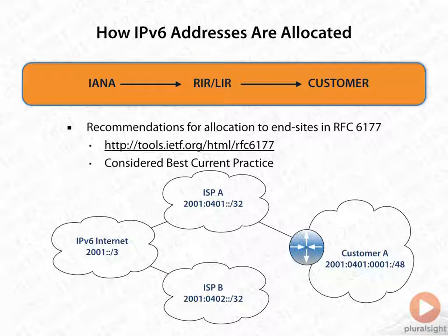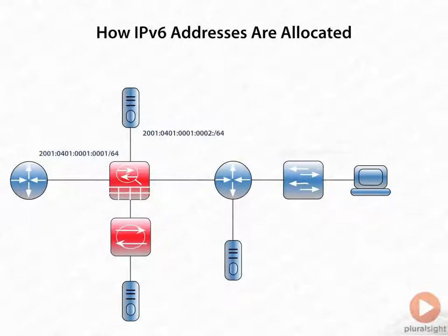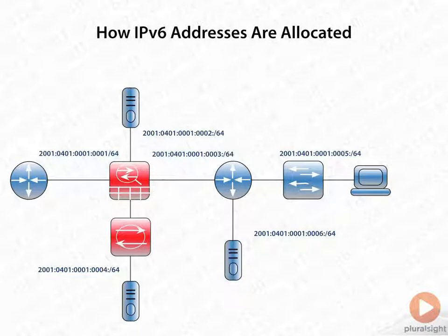We have 16 bits remaining that we can allocate internally as a customer. Remember, 64 bits is where we cut it off — the first 64 bits of the address will be the network and the last 64 will be the host. So looking at that allocation inside an organization, we can see it building: 2001:0401:0001 is fixed, and then the next portion — 0001/64 — is the allocation between the firewall and the external router. We can see it works its way around: 2, 3, 4 on the bottom, then 5 and 6 on the right-hand side network with a server connected to it.